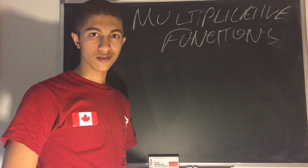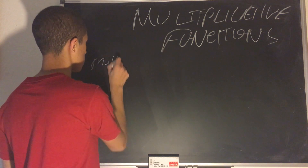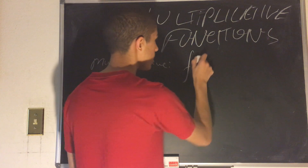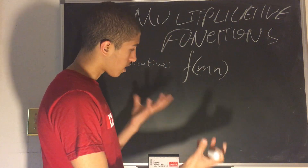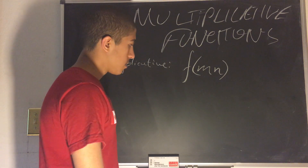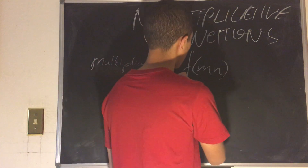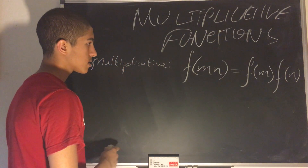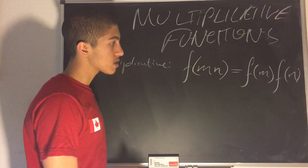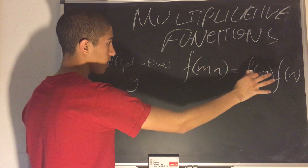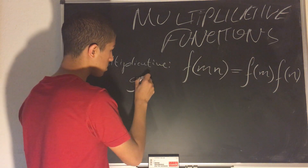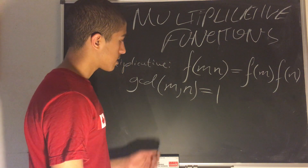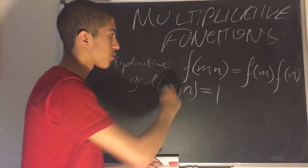So what is a multiplicative function? Well, a multiplicative function is defined as some f such that f of m times n — where m and n are two different numbers — so f(mn) is equal to f(m) times f(n). The caveat is that this holds only when gcd of m and n is equal to 1, which necessitates that m and n be relatively prime for this condition to hold.